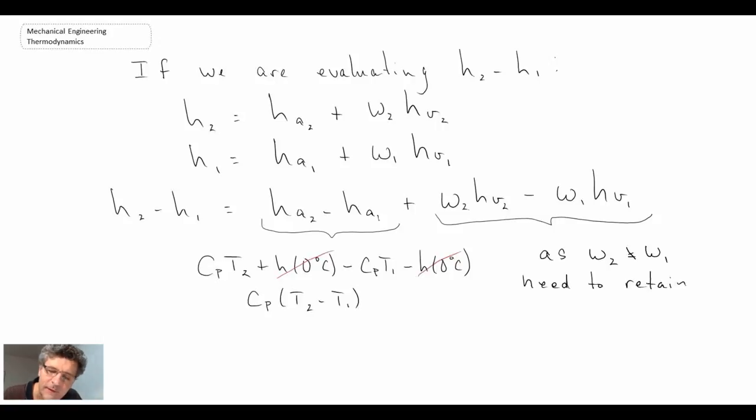We need to retain the full term given that the enthalpy at zero degrees C we said was 2501.3 or something of that order. It might vary depending upon the book that you're using. But given that we can't make the cancellation that we had in the first term and cancel out the enthalpy there because the specific humidity value between two and one will change. But anyways, that gives us an approximation for calculating enthalpy change per kilogram mass of dry air.